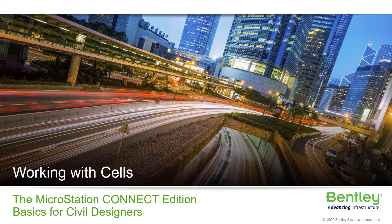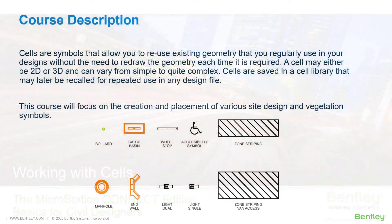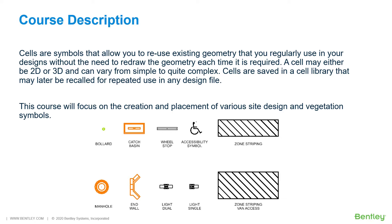It contains exercises to introduce a new user to the MicroStation Connect Edition. Cells are symbols that allow you to reuse existing geometry that you regularly use in your designs without the need to redraw the geometry each time it is required. A cell may be either 2D or 3D and can vary from simple to quite complex. Cells are saved in a cell library that may later be recalled for repeated use in any design file. This course will focus on the creation and placement of various site design and vegetation symbols.